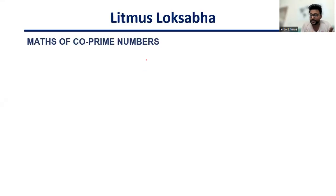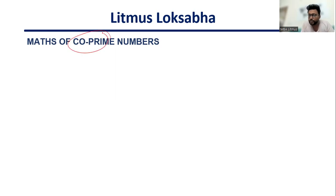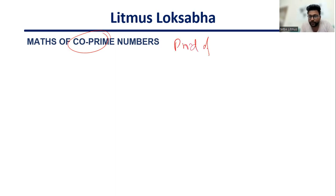All right, everybody, I'm hoping that you're all doing great. A big interesting question goes on market, which is co-prime. Co-prime basics, but I'll make an interesting aspect discuss, which is the product of two co-primes. How can I express a number as a product of two co-primes?